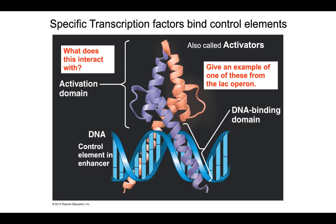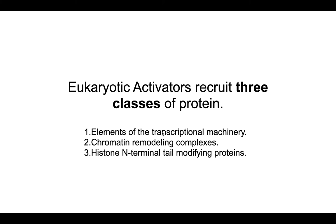There are three classes of protein that eukaryotic activators recruit. They might recruit elements of the transcriptional machinery — things like TF2D, TF2A, TF2B, and so on. They might recruit various chromatin remodeling complexes — protein complexes that change the stretch of DNA wound around a nucleosome core. And they might interact with and recruit histone N-terminal tail modifying proteins, for example, JMJD3 and UTX.